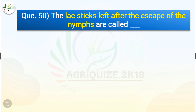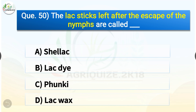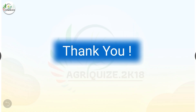Question number fifty: The lac sticks left after the escape of the nymphs are called what? The options are: shellac, lac dye, funki, or lac wax. The correct answer is option C — funki. The lac sticks left after the escape of the nymphs are called funki. That was all — thank you friends for watching our video. Hope you find it useful. Please subscribe to our YouTube channel for more such videos.